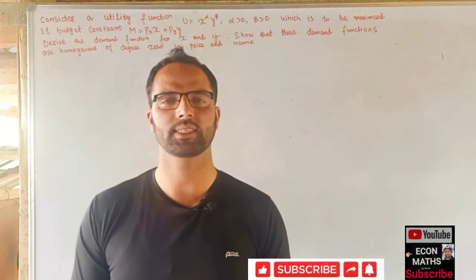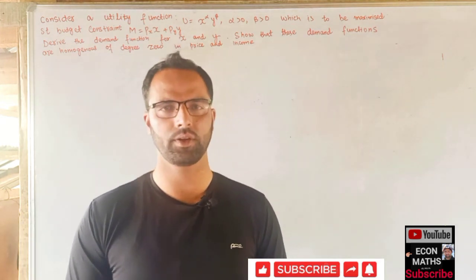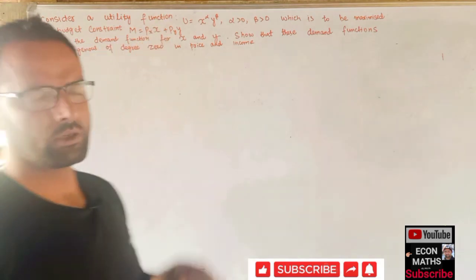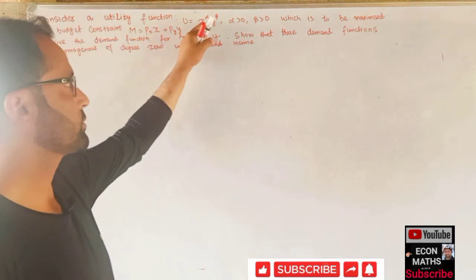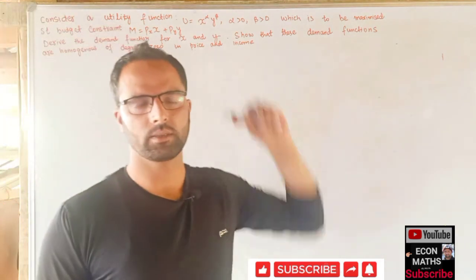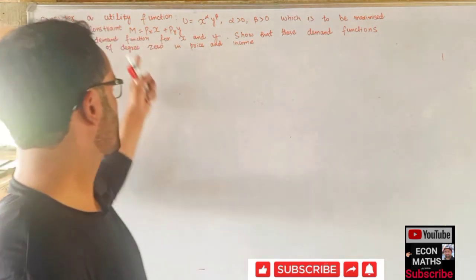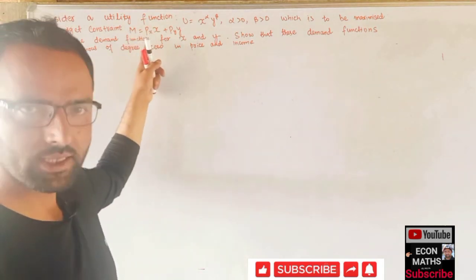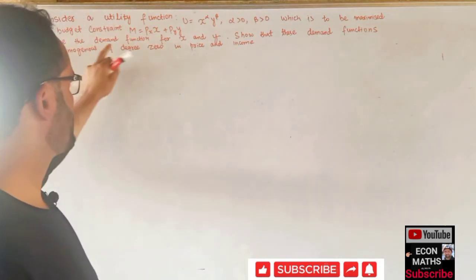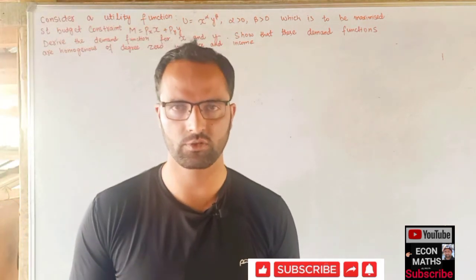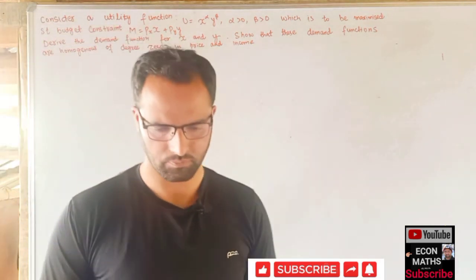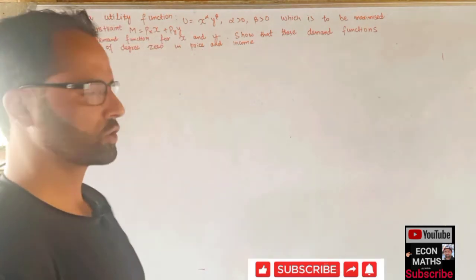Hi, this is Halal. In this video on the mathematical economics series, we will solve a problem from the Indian Economic Service 2018 paper. The question gives us a utility function U = x^α * y^β, where α and β are greater than zero. Subject to a budget constraint, we have to maximize this utility function and derive the demand functions for x and y.